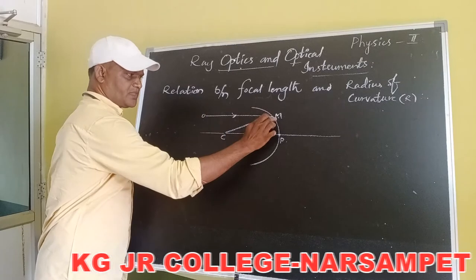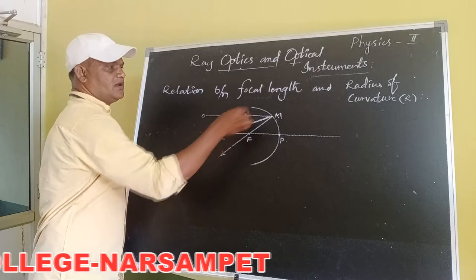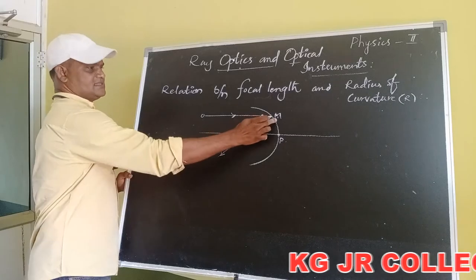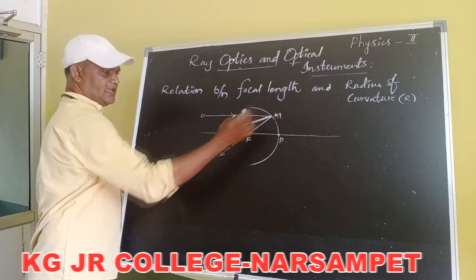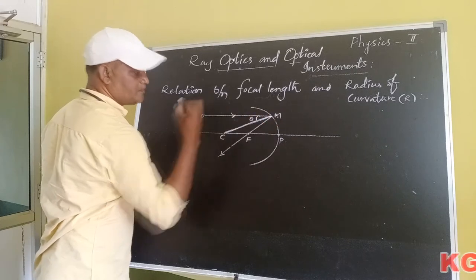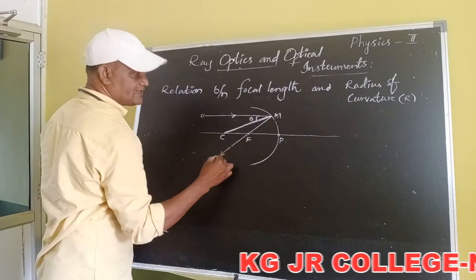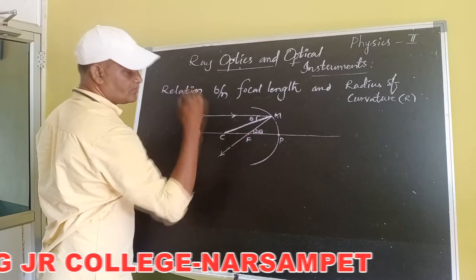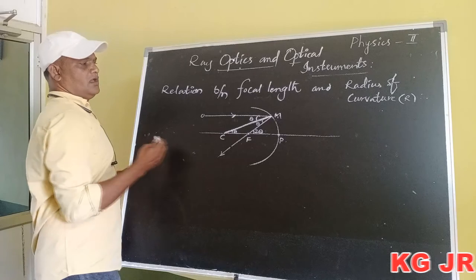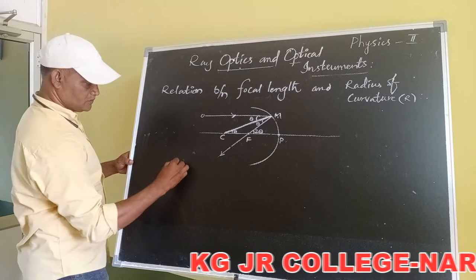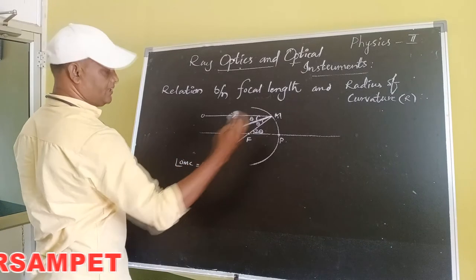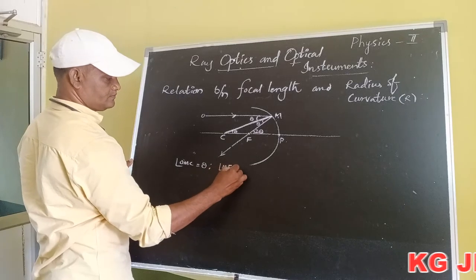The light ray is incident parallel to the principal axis along OM and reflected along MF. At the point of incidence, the normal is CM. The angle made by the incident ray at M is theta, and the angle made by the reflected ray at M is 2 theta. So angle OMC equals theta and angle MFP equals 2 theta.